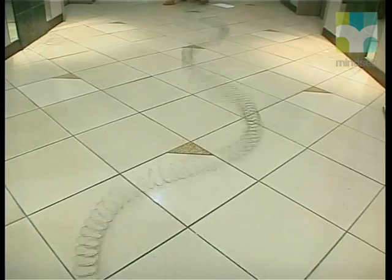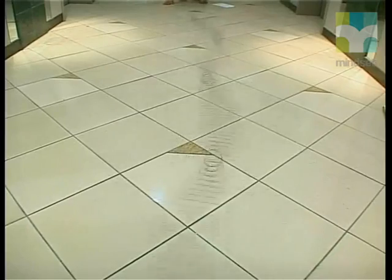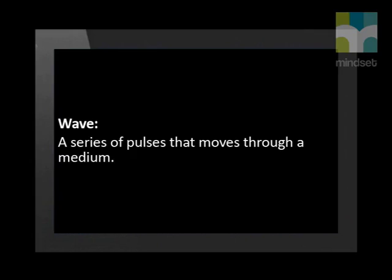So if a pulse is a single disturbance that moves through a medium, then what is a wave? Did the demonstration help you figure out the answer to the question? Here's our definition of a wave. A wave is many of the same pulses moving through a medium.